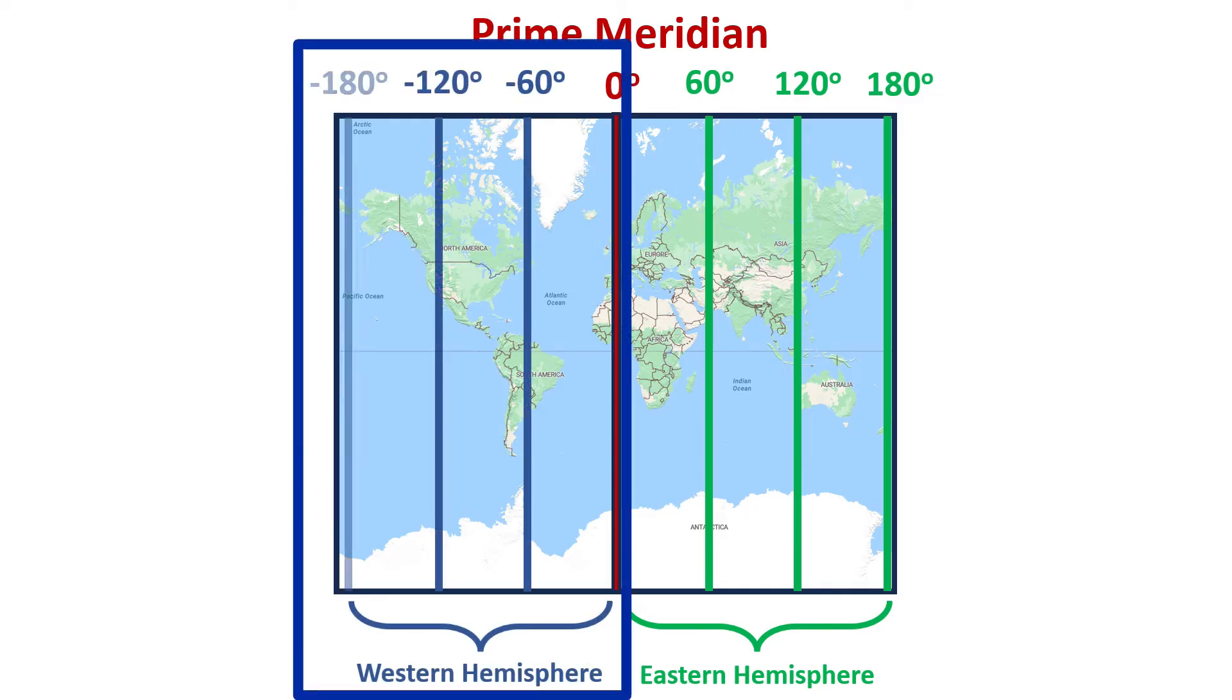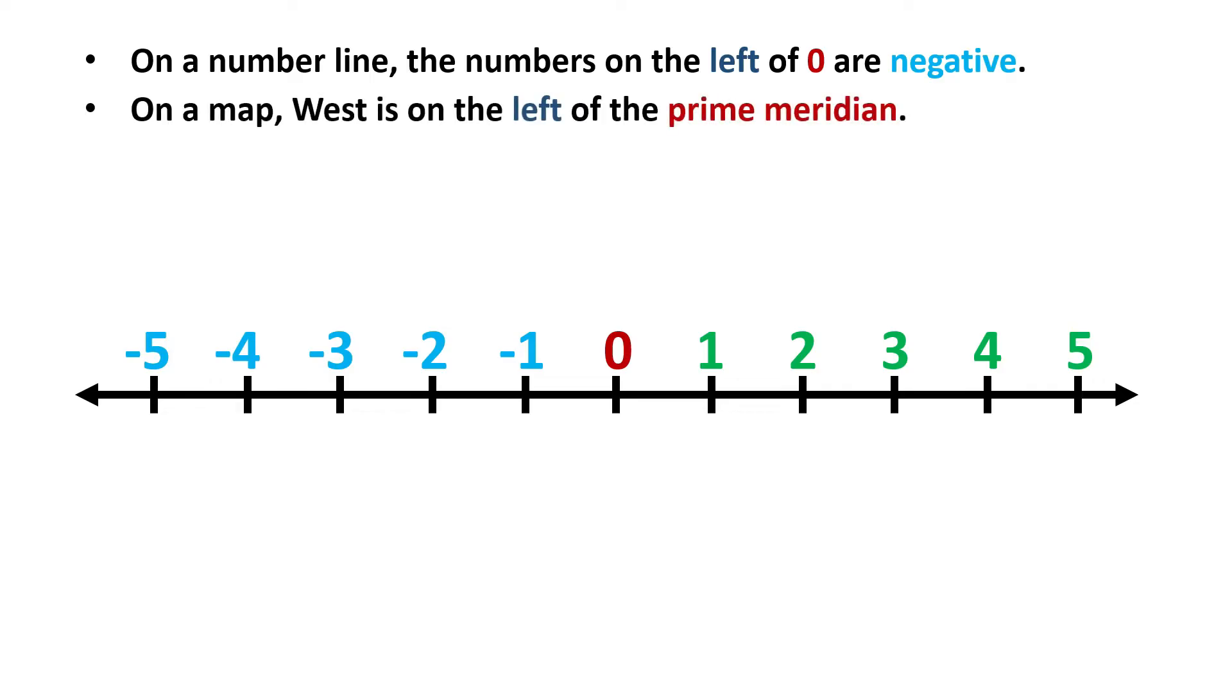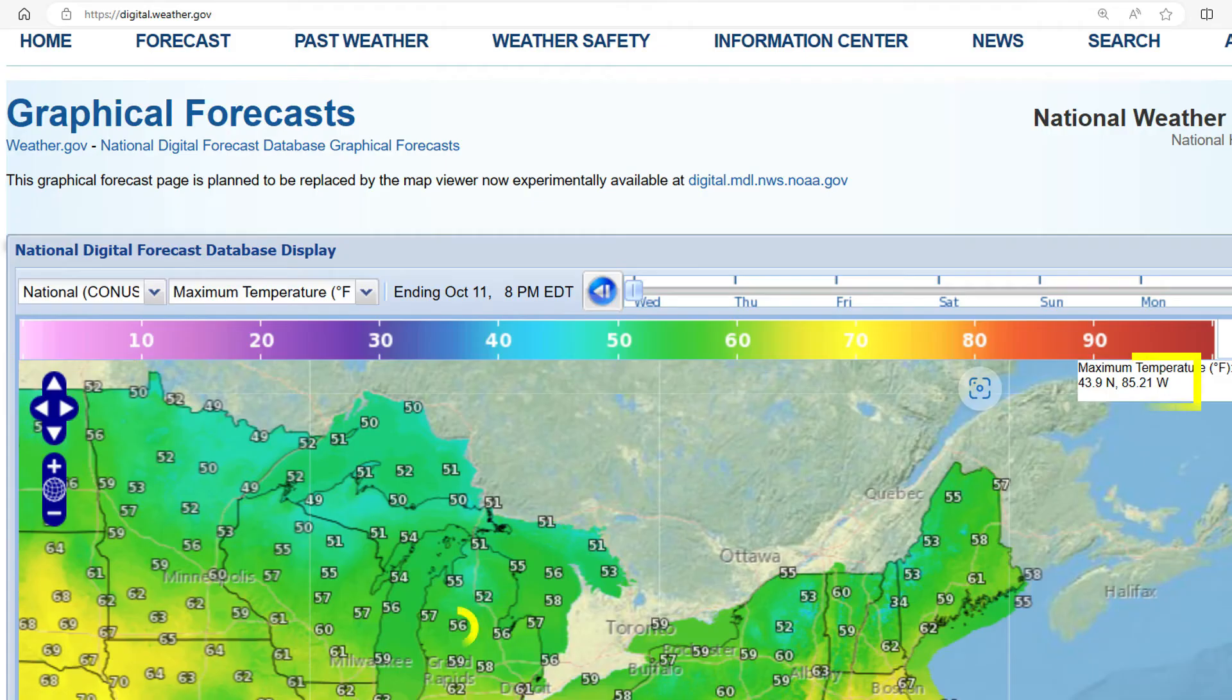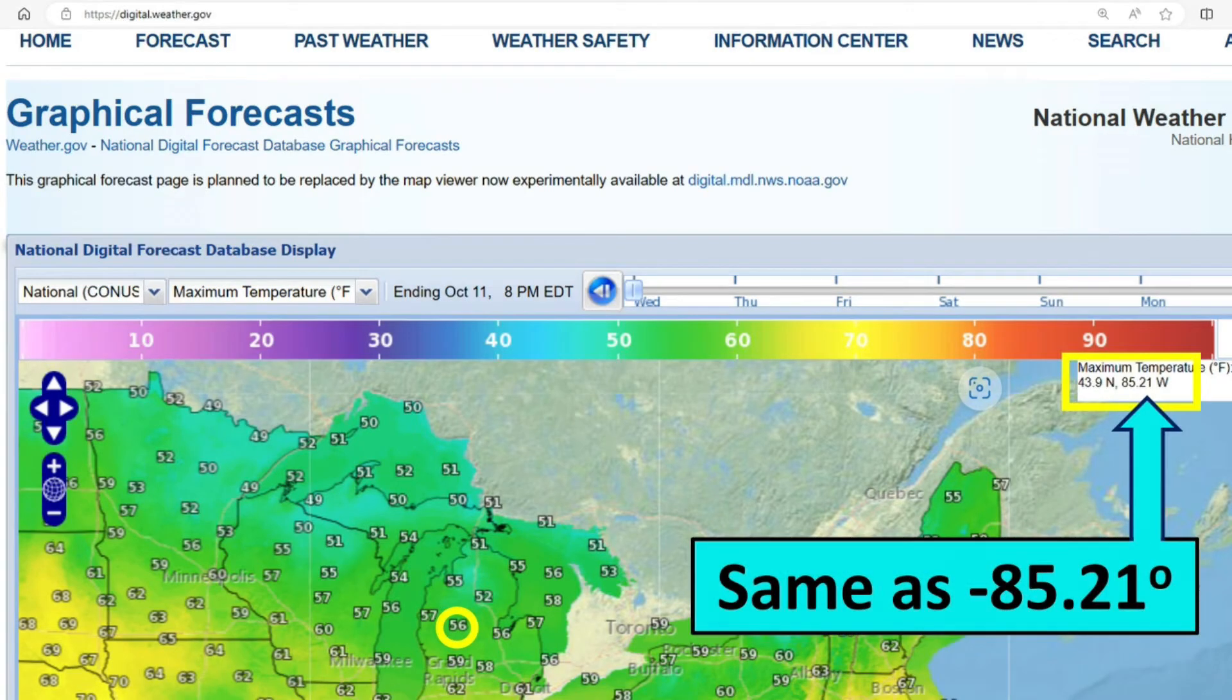One way to remember that the negative longitude values are in the West is to think of a number line. On a number line, the numbers on the left of the zero are negative. Likewise, on a map, West is on the left of the prime meridian, which has a value of zero. So, West's longitude values are negative. Sometimes people write a W letter to mean West, rather than write a negative symbol.